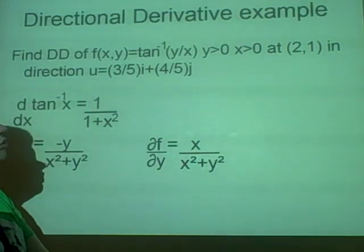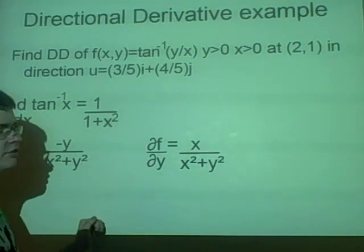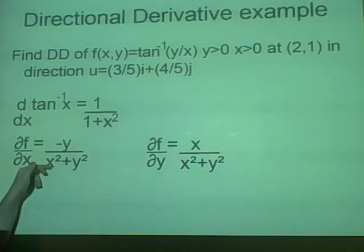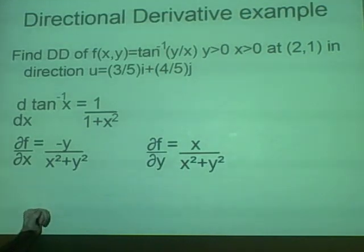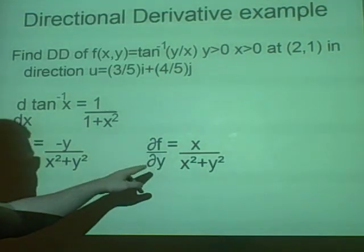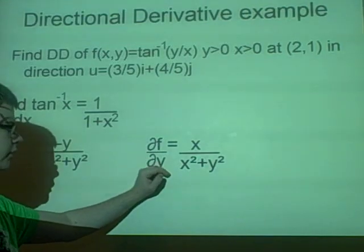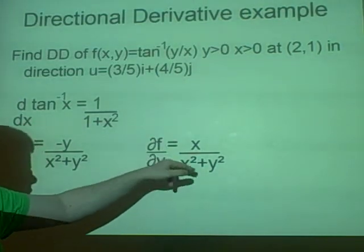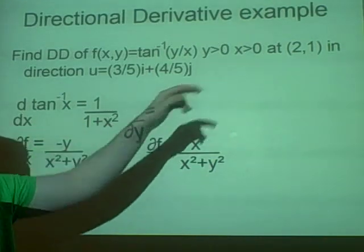Now we want it at the point (2,1). So we substitute our values in. So we'll have -1/5, so minus a fifth for our partial derivative of x, and this will have 2/5 for the partial derivative of y with our (2,1).